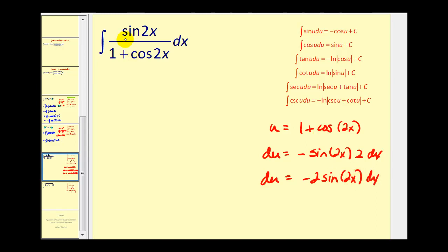Notice how our integral does contain sine two x dx. So let's divide both sides by negative two. So negative one half du is equal to sine two x dx. Let's go ahead and try to write this in terms of u. So sine two x dx is equal to negative one half du. And then since u is equal to one plus cosine two x, this is just one over u. So this simplifies nicely.